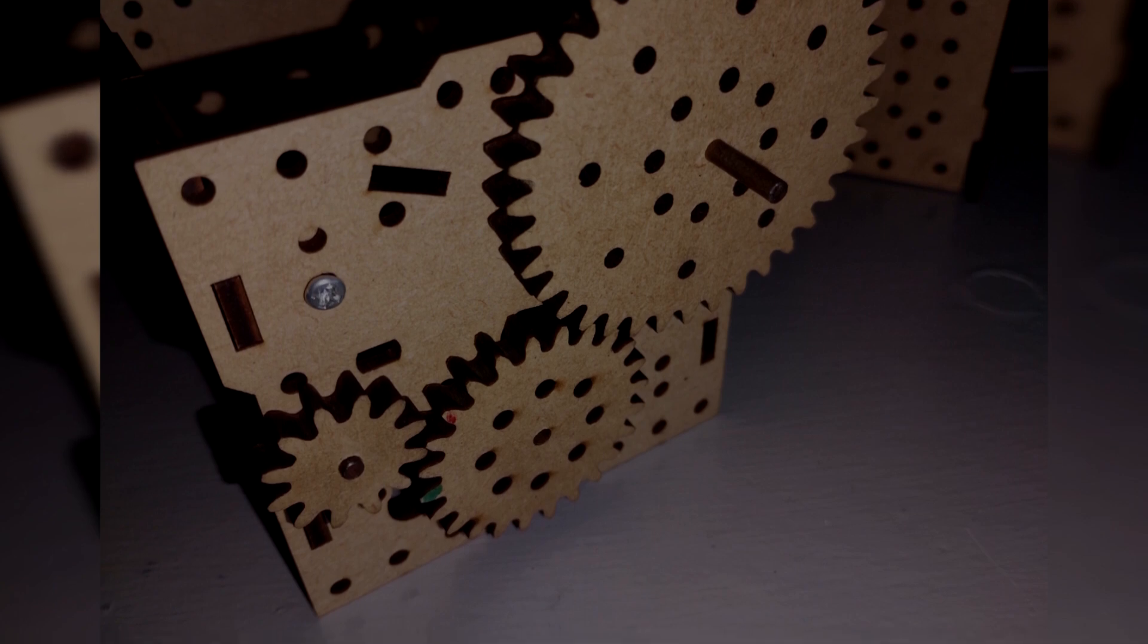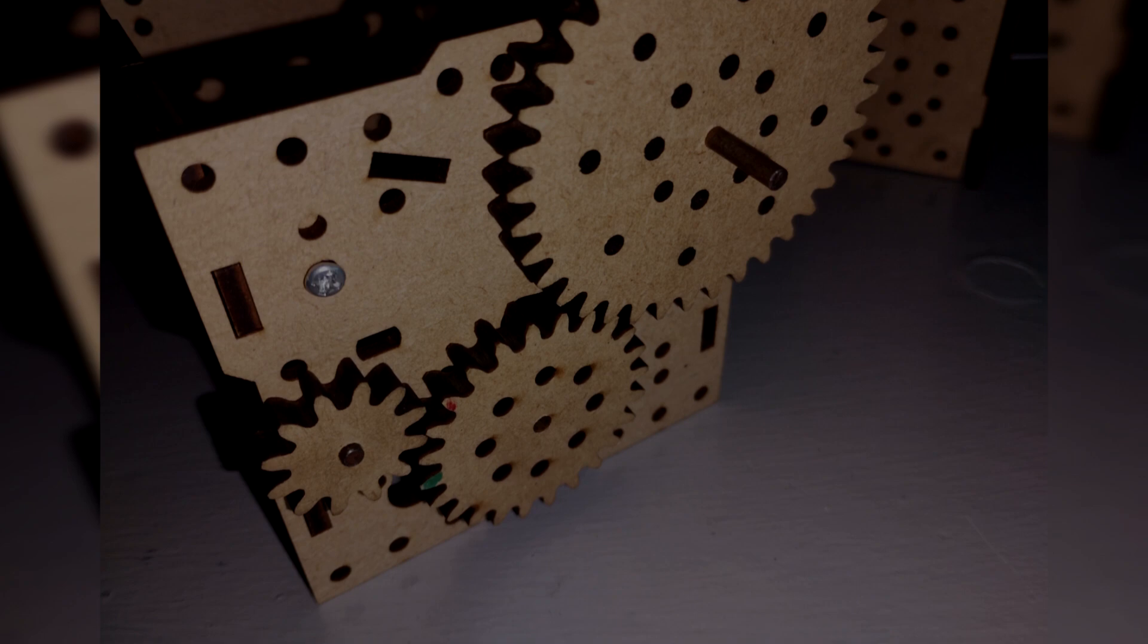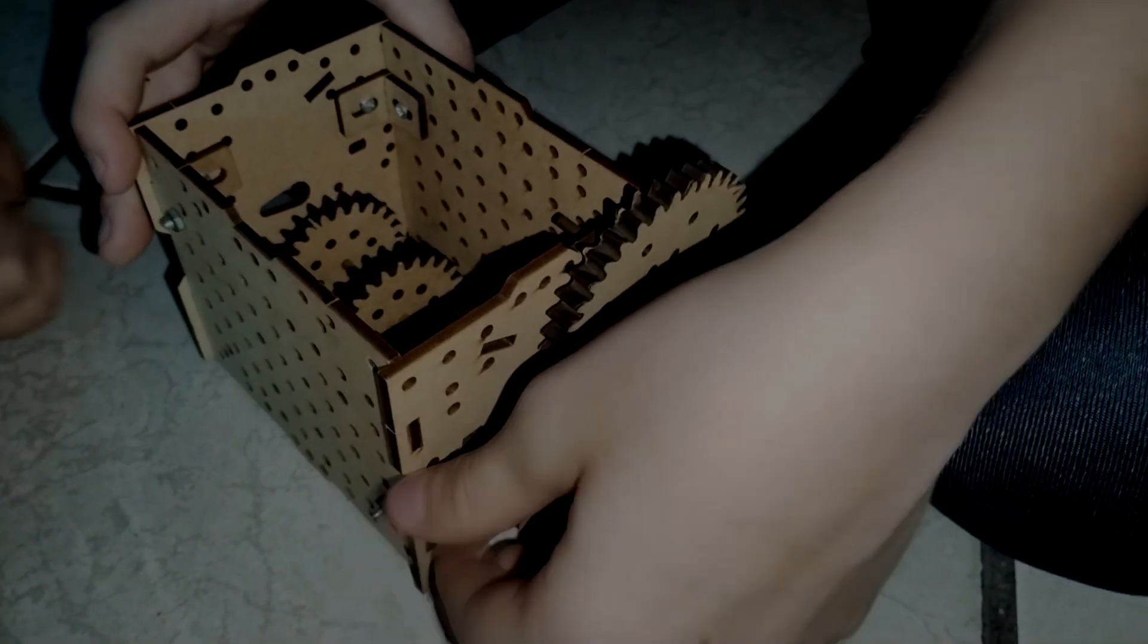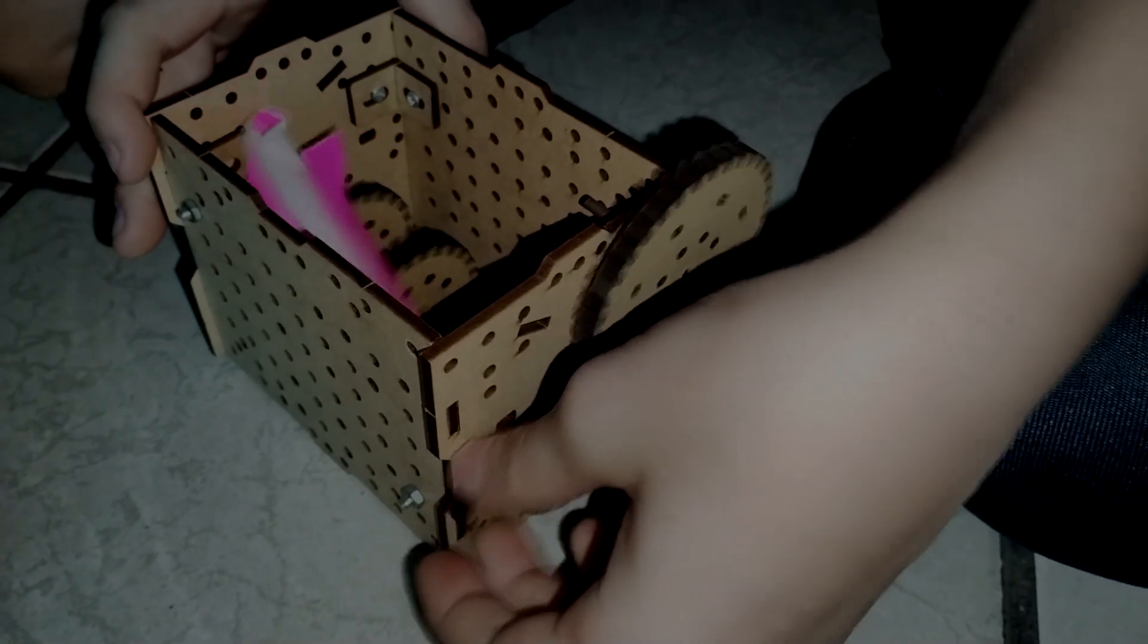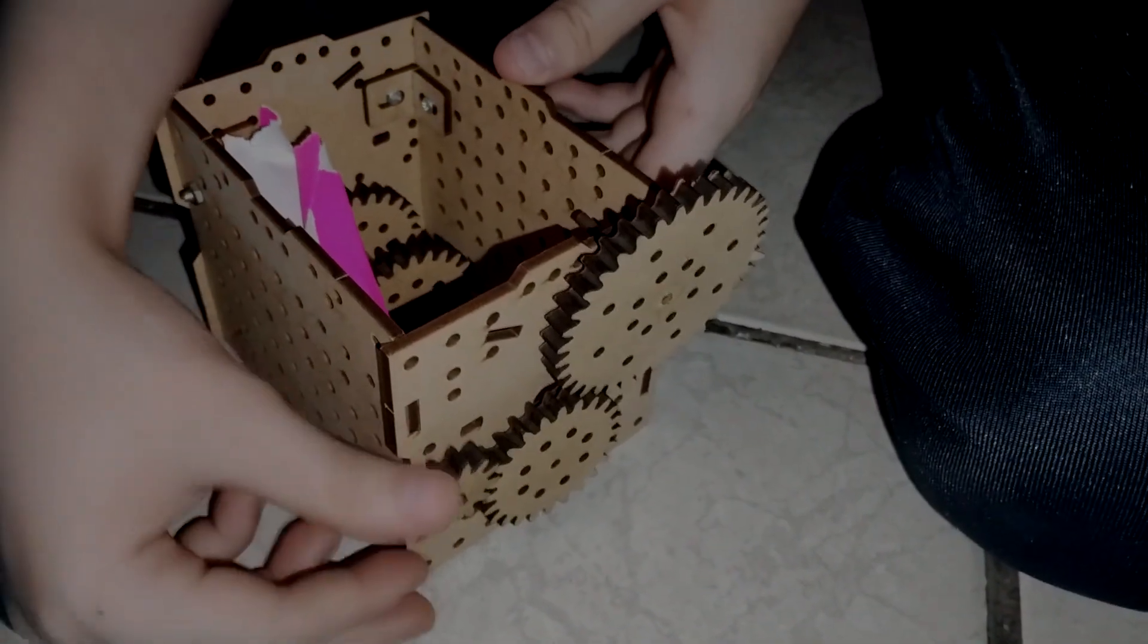Para el engranaje mediano vamos a usar el mismo eje que utilizamos para insertar los tres engranajes dentro de nuestra estructura, y para el engranaje grande vamos a utilizar otro eje mediano.